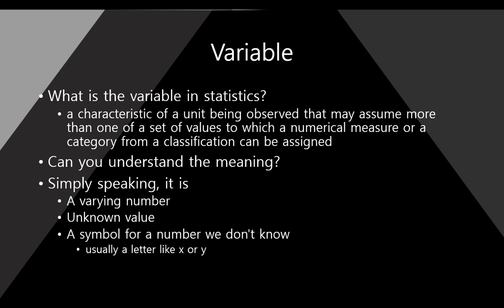So, here, simply speaking, the variable is varying number. In any variable, there are so many numbers and the numbers are varying. And the variable is also unknown value. We don't know the value before our checking on that kind of some descriptive statistics.